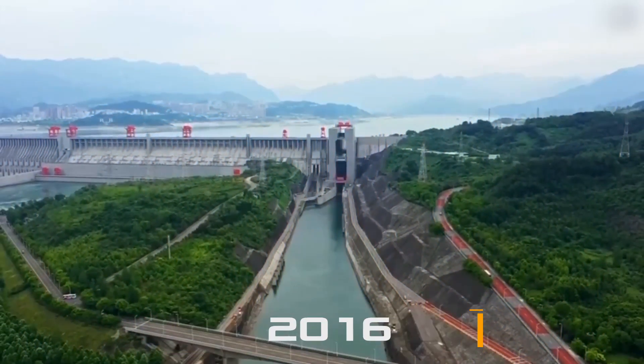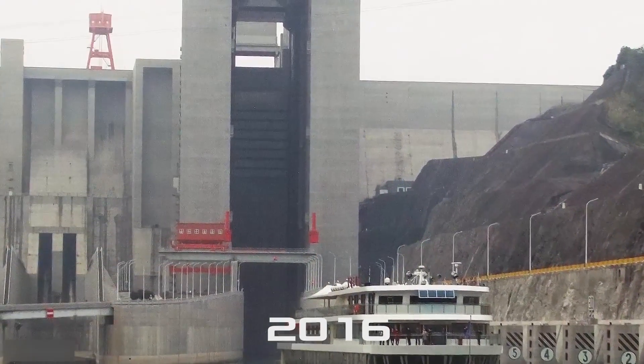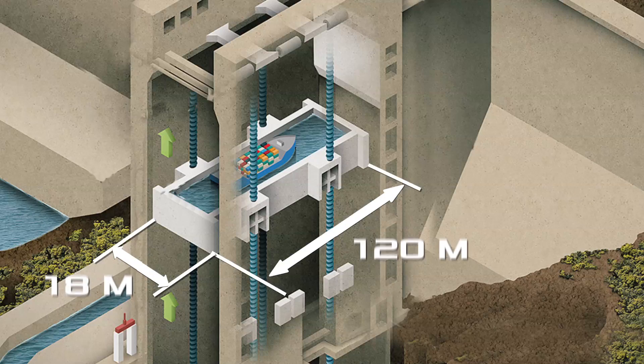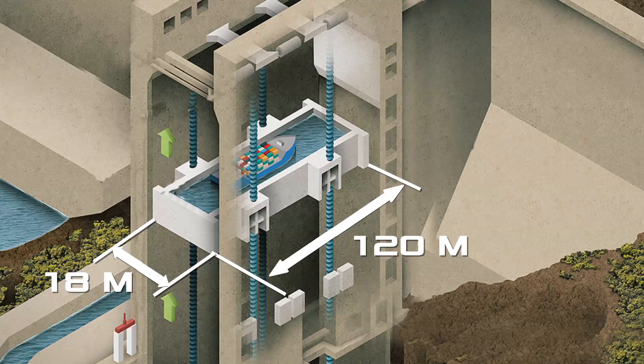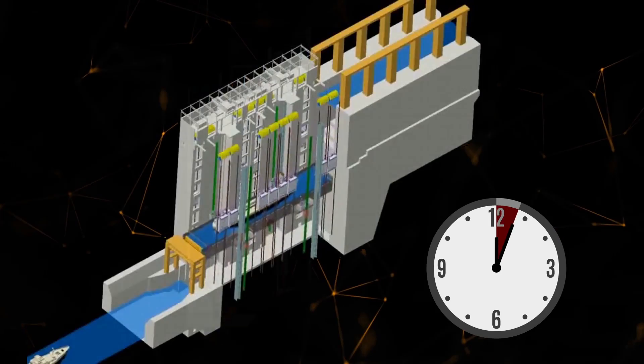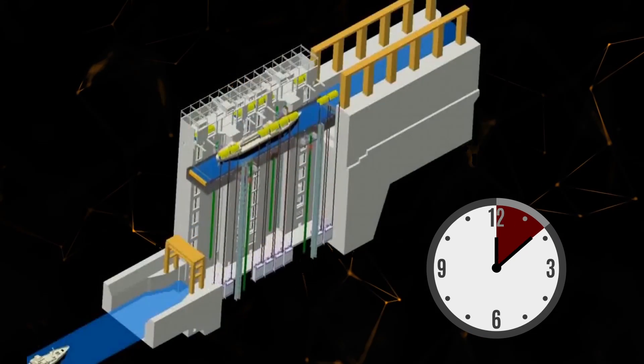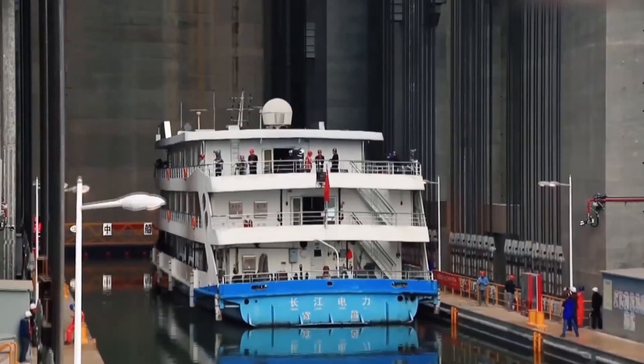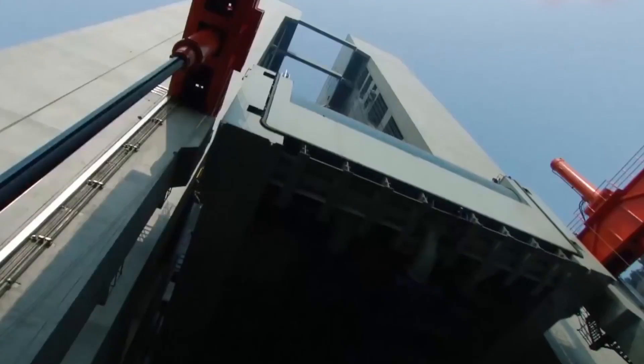Therefore, in 2016, the world's largest elevator was put into operation. With a length of 120 meters and a width of 18 meters, the elevator is capable of lifting any ship with a displacement of up to 3,000 tons in just eight minutes. Just imagine the speed of an elevator lifting a huge ship to a height of 113 meters in less than 10 minutes.